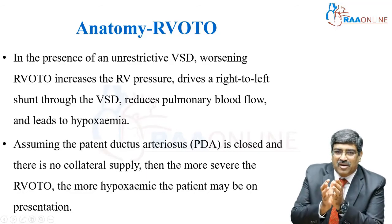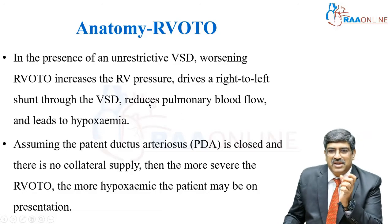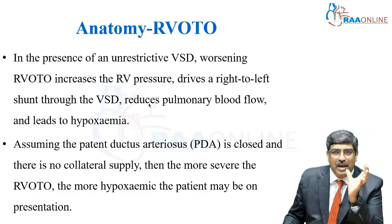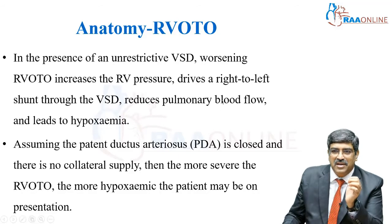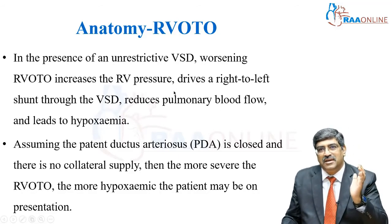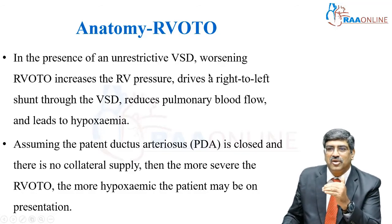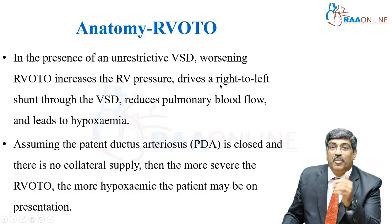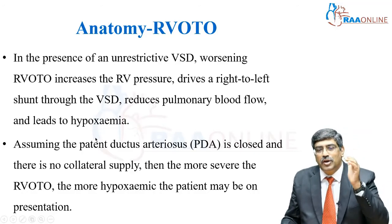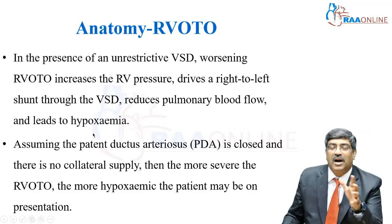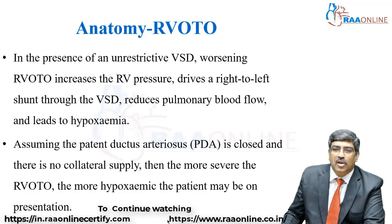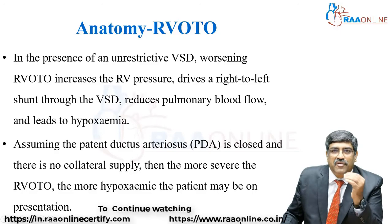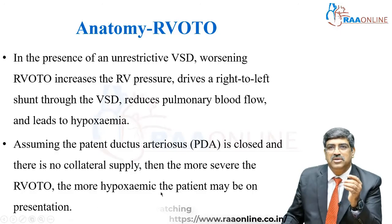With obstruction across the right ventricular outflow tract, right ventricular hypertrophy develops and RV pressure rises. When RV pressure exceeds left ventricular pressure, this gradient diverts blood across the VSD into the left ventricle, creating a right-to-left shunt. This reduces pulmonary blood flow, causing hypoxemia. In the newborn period, if the PDA is closed and there is no collateral blood supply, pulmonary blood flow becomes very, very low. The more severe the obstruction across the right ventricular outflow tract, the more cyanotic the child will be.